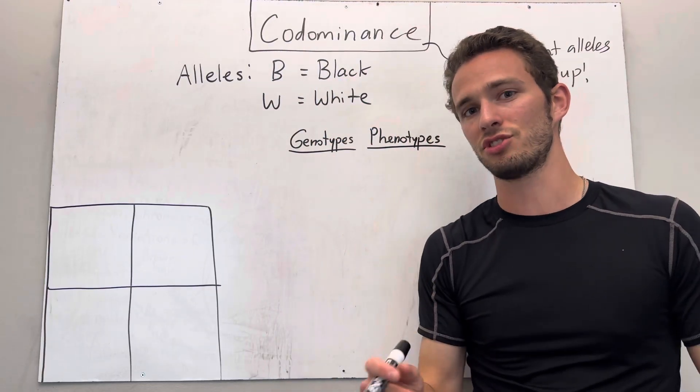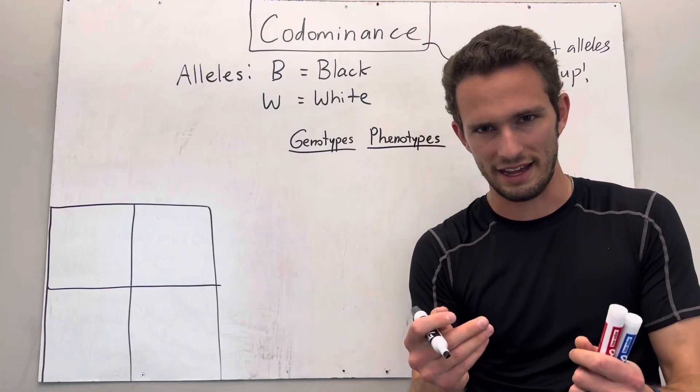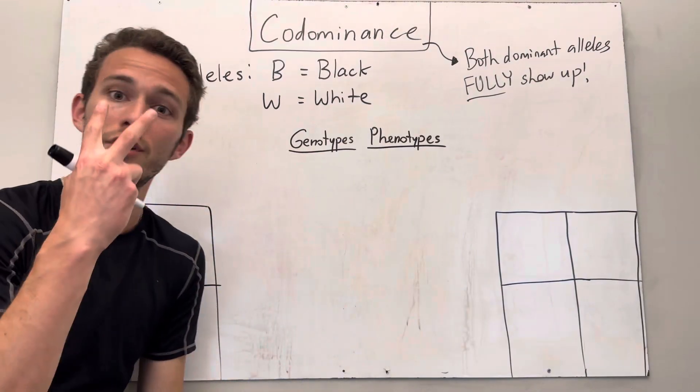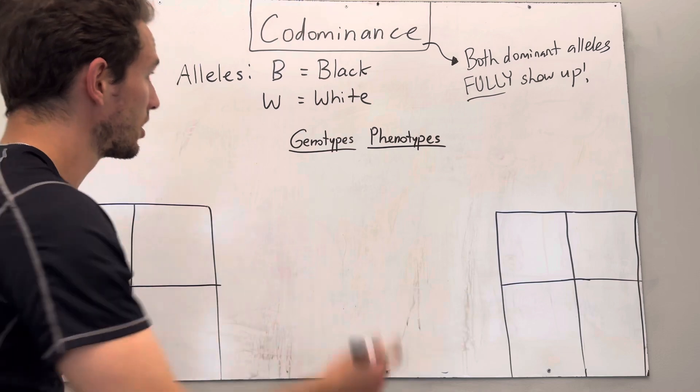This is in cats. So let's think of the possible combinations we can make for that cat. Well, we know that each cat, each individual, will have two alleles, right? One chromosome from each parent.